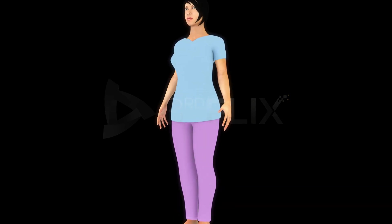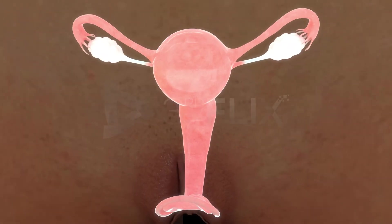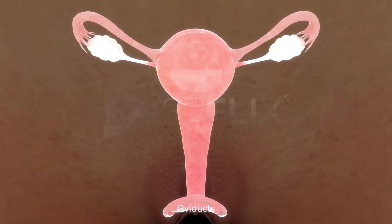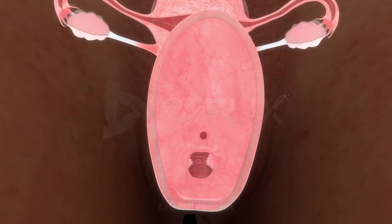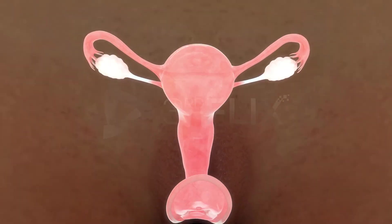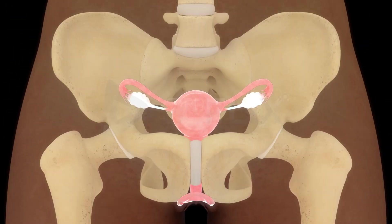The human female reproductive system consists of a pair of ovaries, a pair of oviducts, uterus, vagina, and the female external genitalia. These structures are located in the pelvic region.